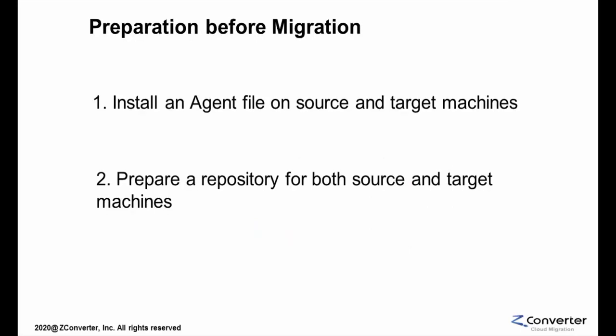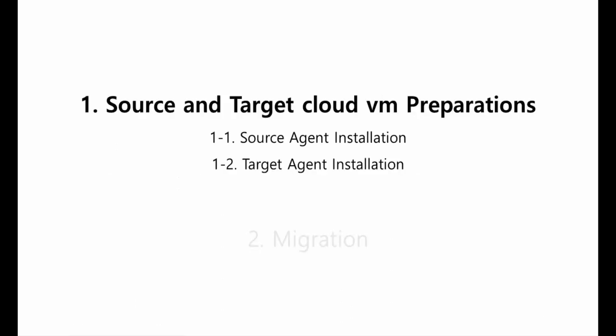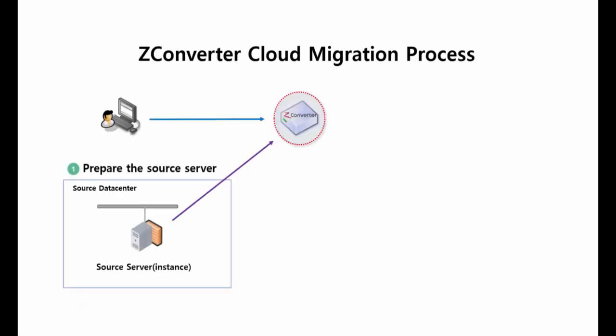To prepare for the migration, you must first install an agent file on source and target machines. Second, you must prepare a repository for both the VMware virtual machine and the OpenStack virtual machine. In this demo, we are using a very basic repository option for both source VMware virtual machine and target OpenStack virtual machine, which means we are just adding an additional disk for both OpenStack and VMware repositories. Now, let's take a look at section 1.1 and 1.2, source and target agent file installation.